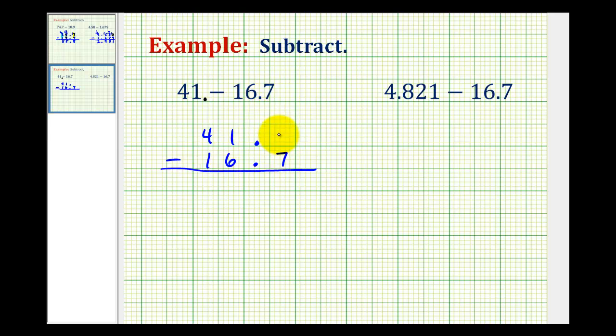We'll put a zero in the tenths place value here, so it's easier to subtract. We'll have to start by borrowing from the one, so it'll be zero, this becomes ten, ten minus seven is equal to three. Bring down the decimal point, borrow from the four. So we have ten minus six, that's four, and three minus one is equal to two. So we have twenty-four and three tenths for this difference.